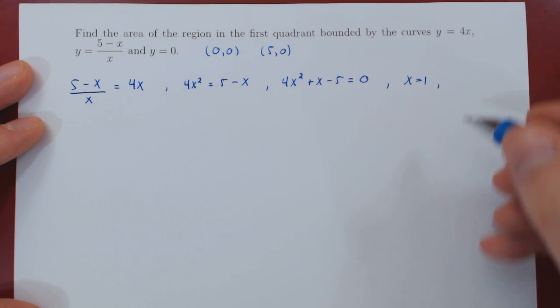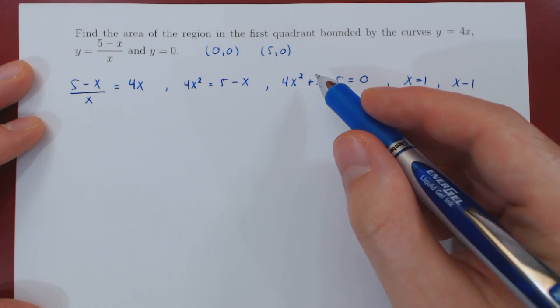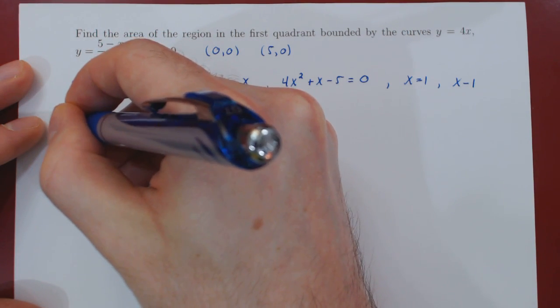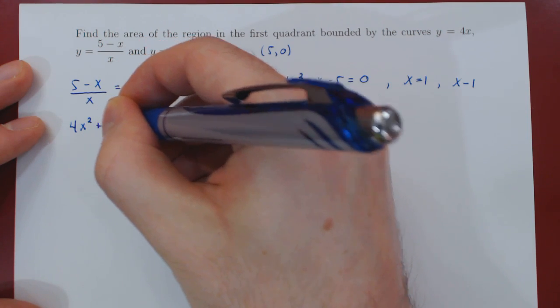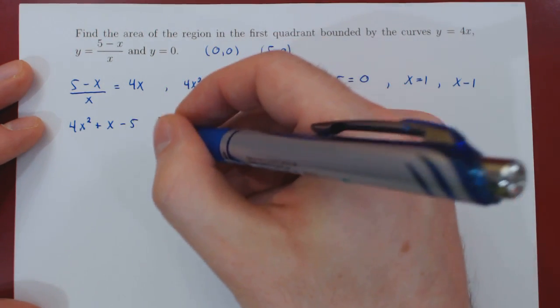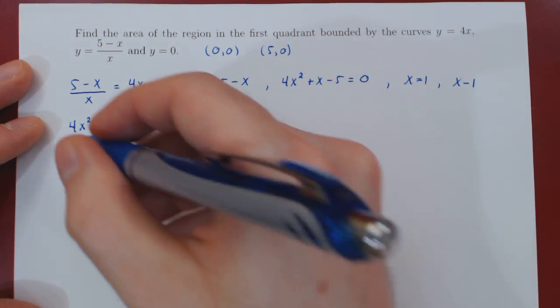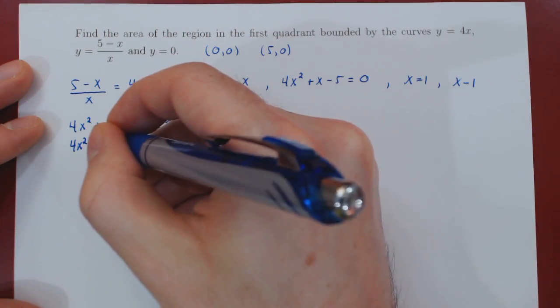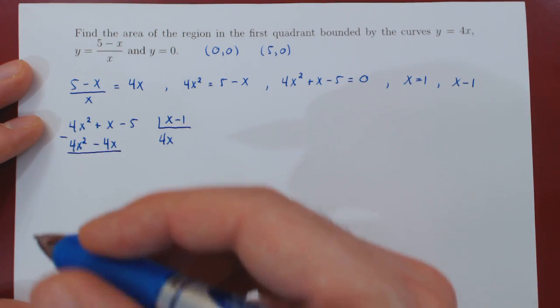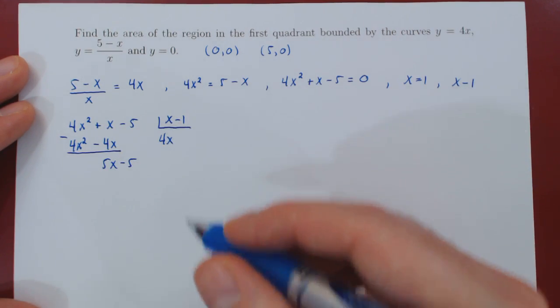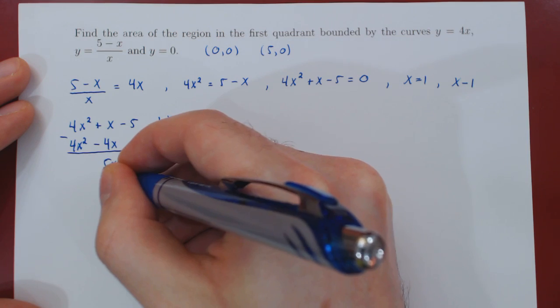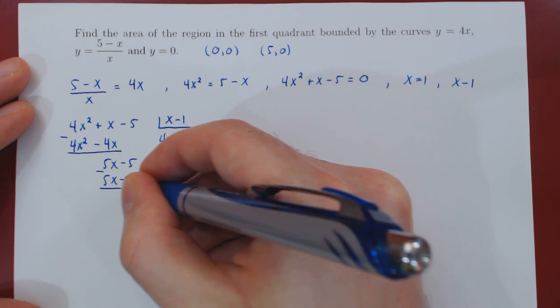We can now find the missing factor using the zero theorem. Since x equals 1 is a zero of this polynomial, automatically x minus 1 will be a factor. We can find the missing factor by long division, dividing this quadratic by this linear polynomial. What times x is 4x squared? Simply 4x. Multiply by x minus 1, and obtain 4x squared minus 4x. Subtract. These two cancel. x minus negative 4x is positive 4x, so 5x minus 5. Now we repeat. What times x is 5x? Plus 5. Times x minus 1: 5x minus 5. We are left with a remainder of 0.